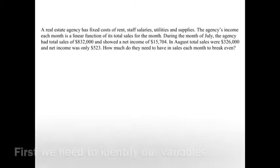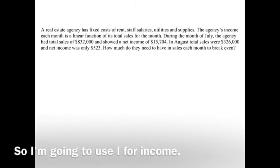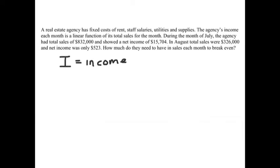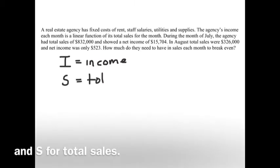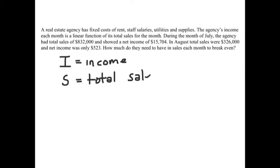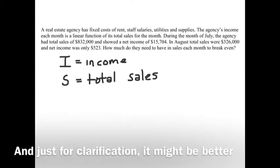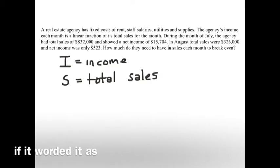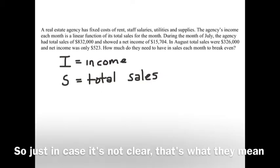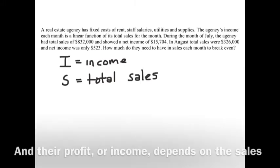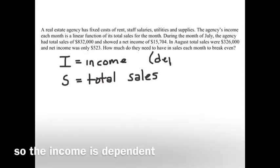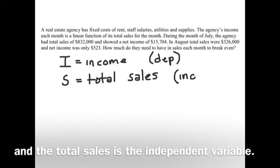Remember the instructions for this worksheet — first we need to identify our variables. It tells us that we've got the income as a function of total sales, so I'm going to use I for income and S for total sales. It might be better worded as profit instead of income, but that's what they mean. The income is the dependent variable, and total sales is the independent variable.